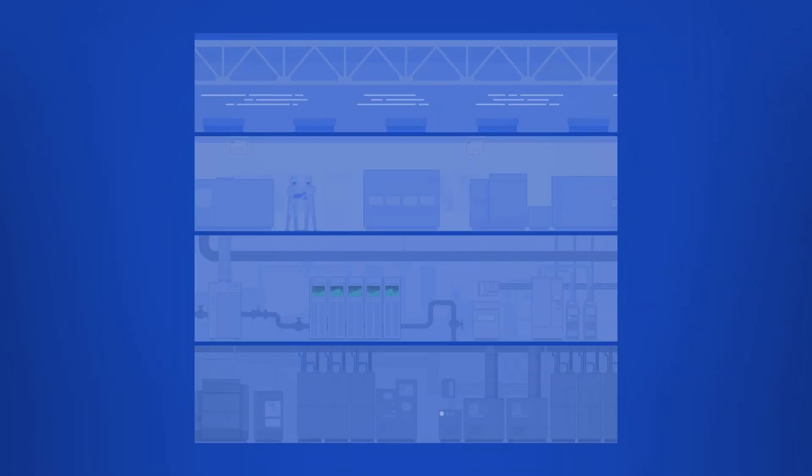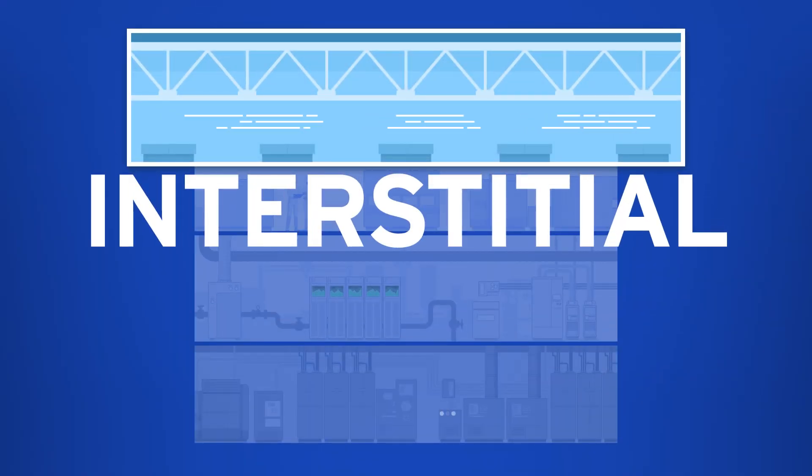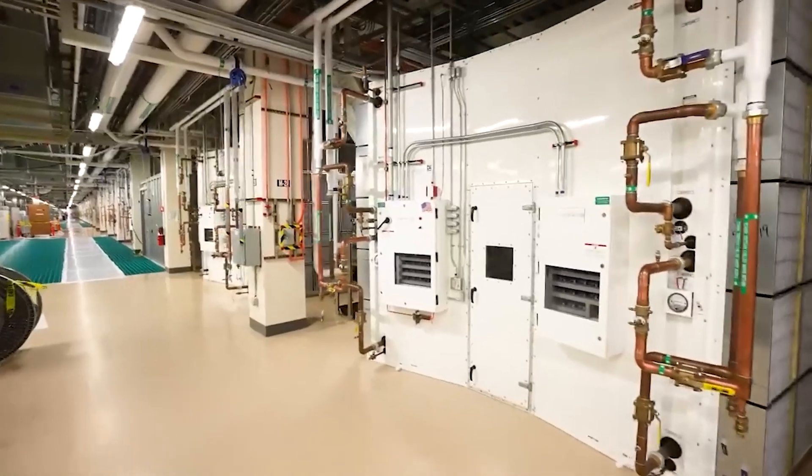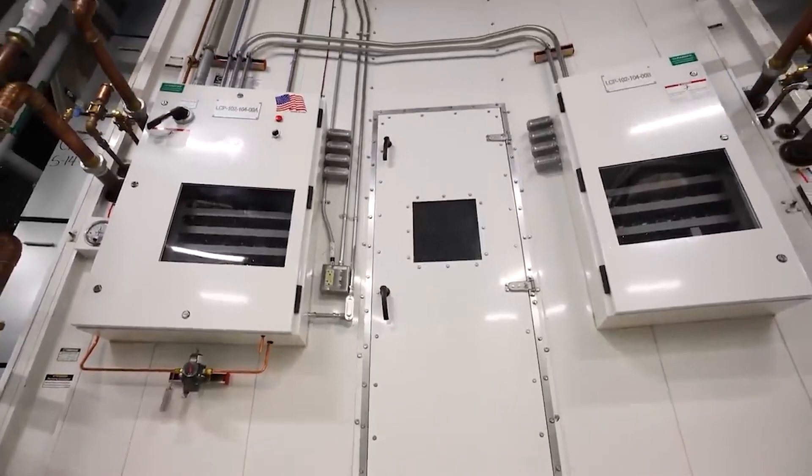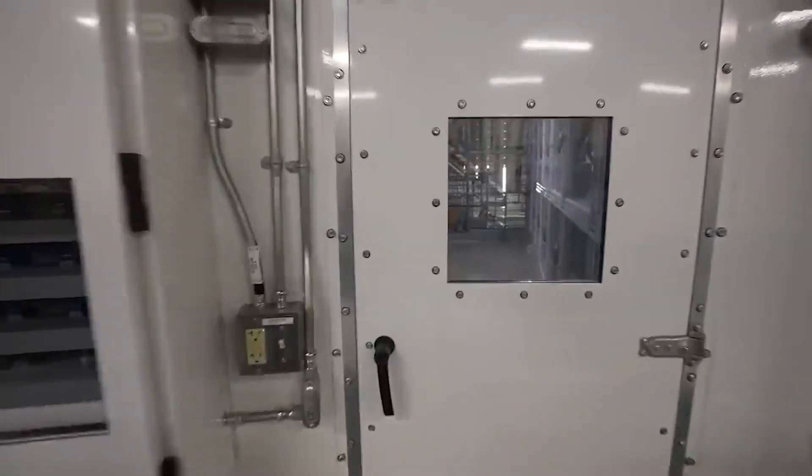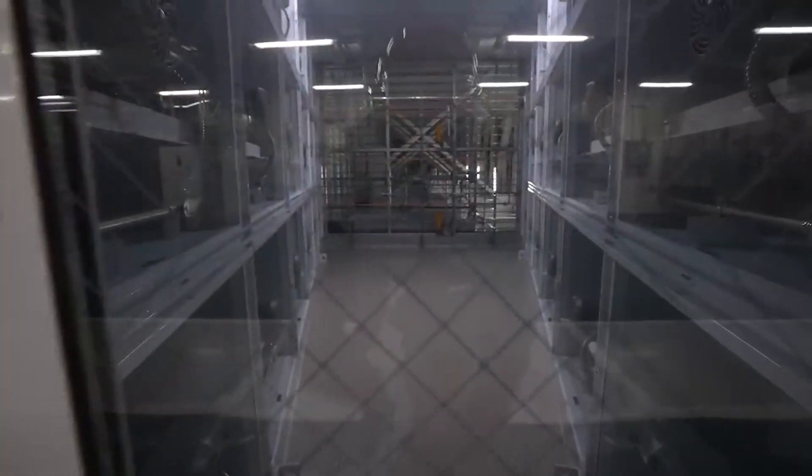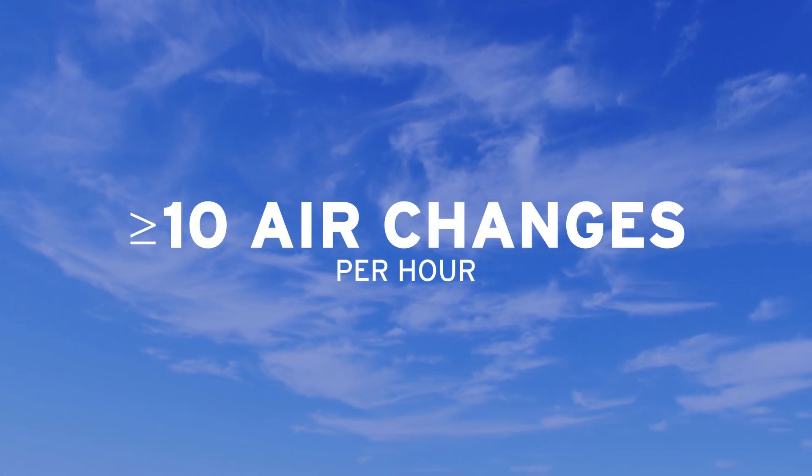Above the clean room is the interstitial and fan deck. This level houses systems that keep clean room air particle-free and temperature and humidity controlled. The air in the clean room must be cleaned continuously. Air from the fabrication area is circulated through high efficiency filters and replaced entirely by clean outside air in minutes. There are at least 10 air changes per hour.